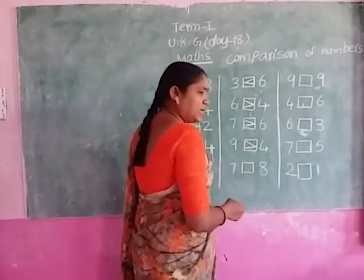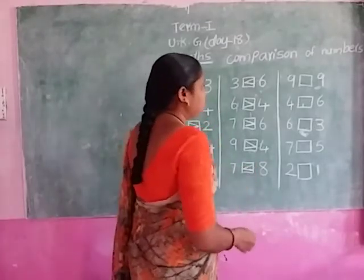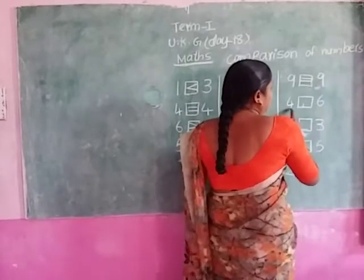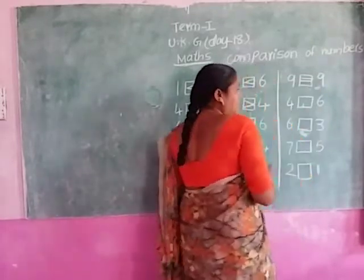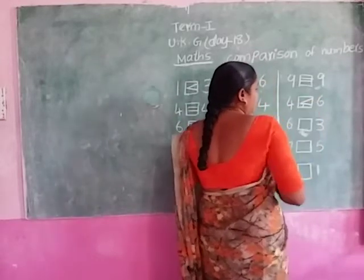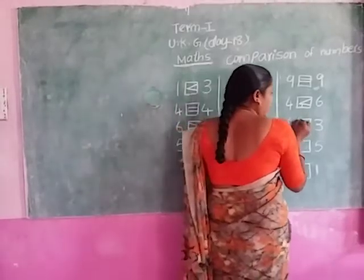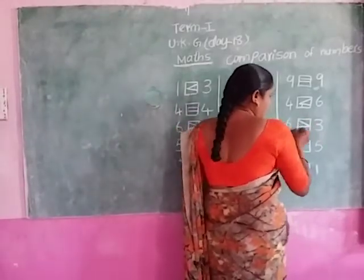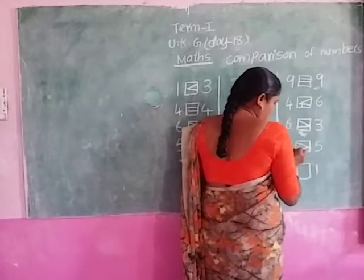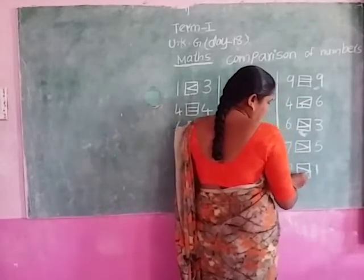Next, seven and eight — which is a greater number? Eight is a greater number. Next, nine and nine — equal to. Next, four and six — which is a greater number? Six is the greater number. Next, six and three — which is the greater number? Six. Seven and five — seven is the greater number. Next, two and one — which is the greater number? Two is the greater number.